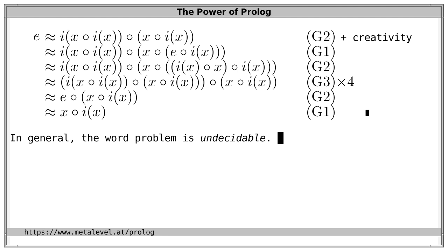More precisely, the word problem is only semi-decidable, not decidable. This means there is no algorithm that takes an arbitrary finite set of identities, always terminates, and always correctly decides whether any given identity is a semantic consequence of the theory. If we systematically search for derivations, we will eventually correctly answer every yes instance, because if there is a derivation we will find it. But if we don't find a derivation, we can't tell whether we simply haven't searched enough or whether there is no derivation at all.